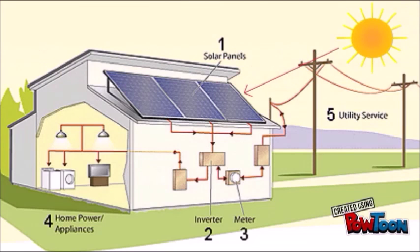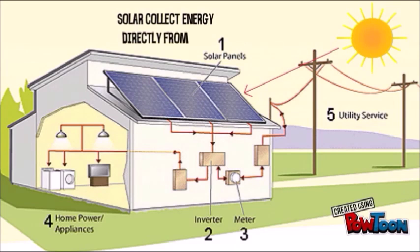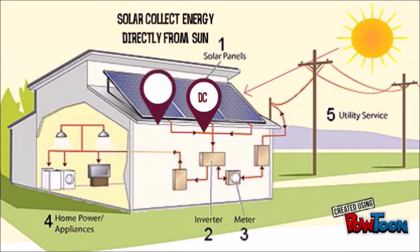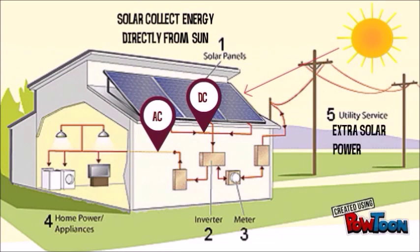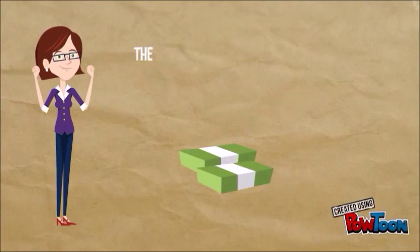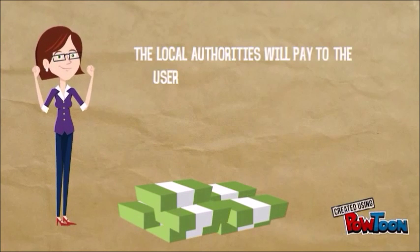Here is the process of the solar system. Solar panels will collect the energy directly from the sun. Next, the energy will flow as DC and convert it to AC through the inverter. Finally, it's ready to be used. If there is extra power, it will flow back into the grid. The local authorities will pay the user for the extra solar power that flows into the grid.